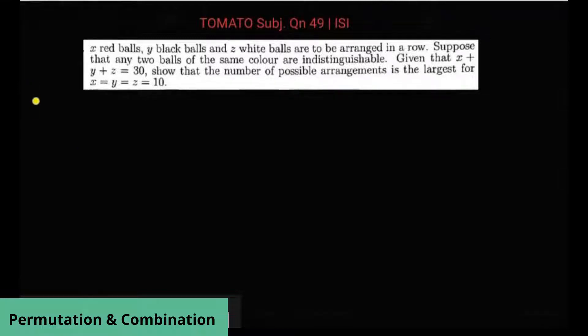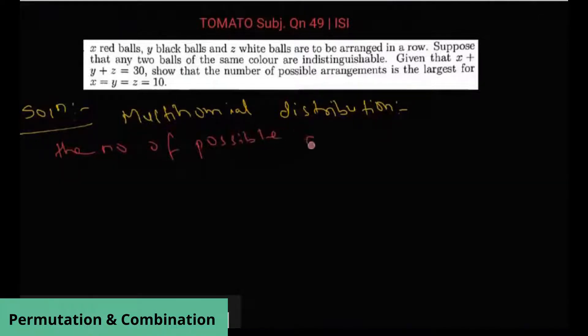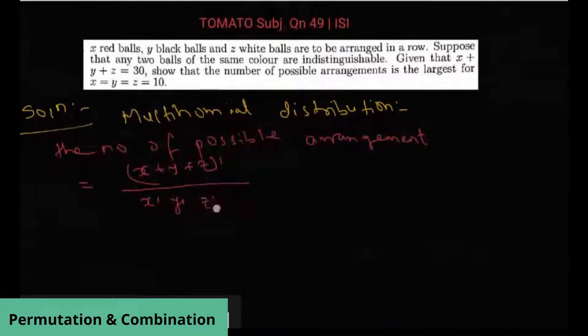So, let's see. This is basically a multinomial distribution, which says that the number of possible arrangements of this x, y, z is equal to x plus y plus z factorial divided by x factorial into y factorial into z factorial.